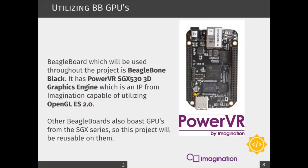BeagleBone Black is a single board computer, a very powerful one, and it boasts a Cortex-A8, which is an application ARM processor, compared to regular Cortex-Ms which are usually found in less expensive microcontrollers. On board the BBB, we have PowerVR SGX-530, which is an IP from Imagination Technologies, and is capable of utilizing OpenGL ES 2.0.